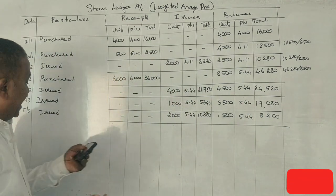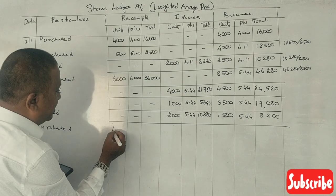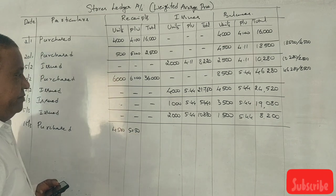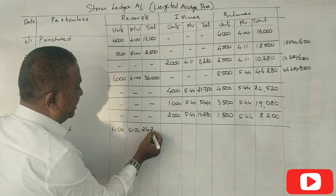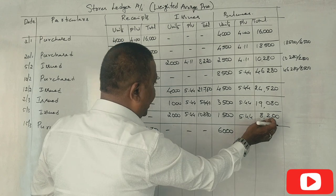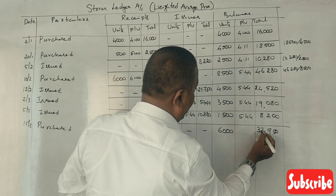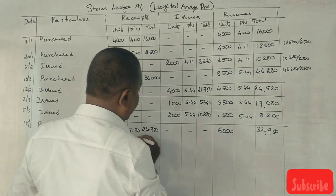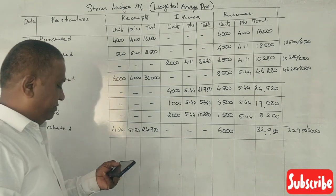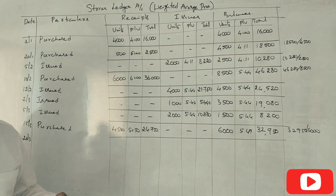On 15th of March we have purchased 4,500 units at 5 rupees 55 cents per unit, giving 24,750. Now 1,500 plus 4,500 is 6,000 units total. Balance value is 8,200 plus 24,750 equals 32,950. So 32,950 divided by 6,000 gives a new per unit price of 5.49.